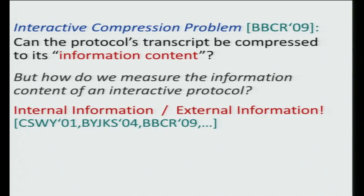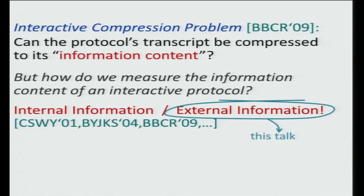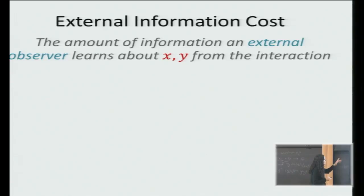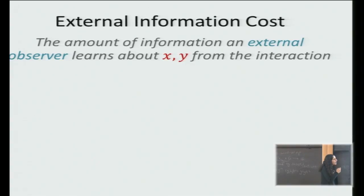This question was considered before, and two notions — internal information costs and external information costs — were suggested and studied by a long line of papers. Today I'm going to talk about external information. Roughly speaking, external information cost is the amount of information that an external observer learns about X and Y from the interaction. Suppose there is a third party who doesn't know the inputs X and Y but can listen to the conversation. We ask how many bits of information can he learn from just watching the conversation about the inputs X and Y.